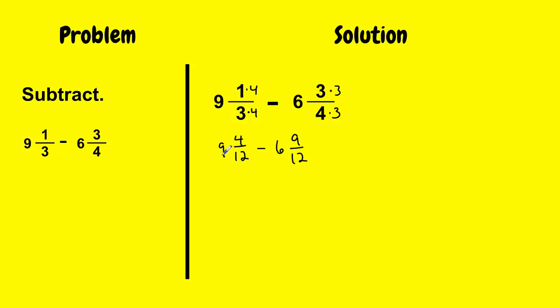Now if I subtract this, I'm going to get 9 minus 6 is 3. And if I subtract or combine the fractions, I get 4 minus 9 over 12. And when I simplify that, I get 3 and negative 5 over 12. So I don't want to leave this fraction here as a negative, so I'm going to rewrite it.